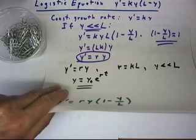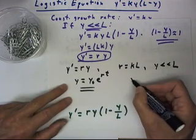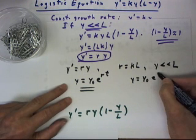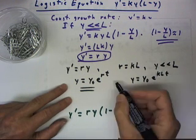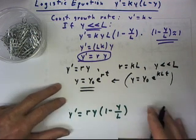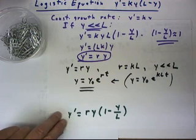And that's identical with the solution we found previously. I'm not sure I have that handy, but let's just remember that our solution was y = y₀e^(kLt). These are identical, except that now we're using r. Well, this motivates us to go back and look at the form that we used for the logistic equation.